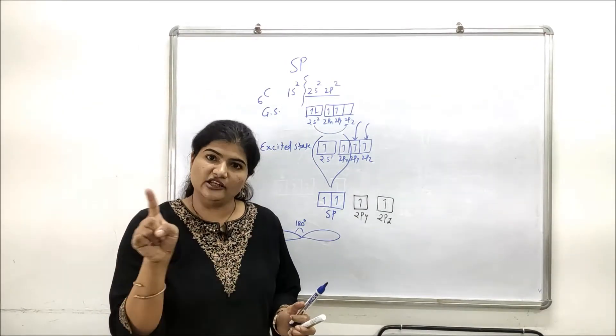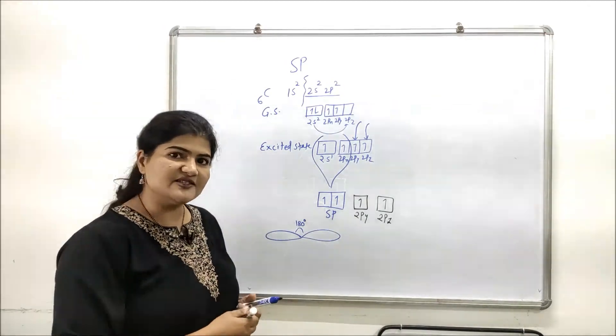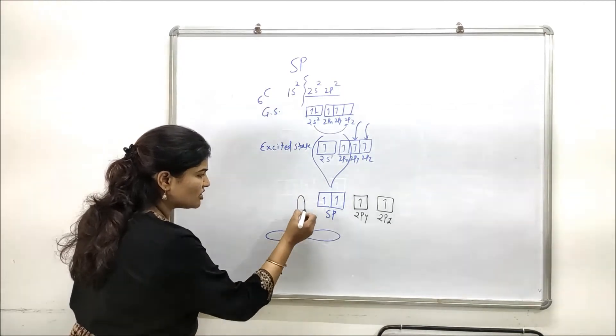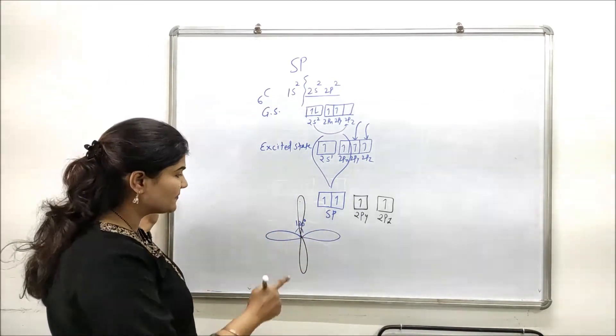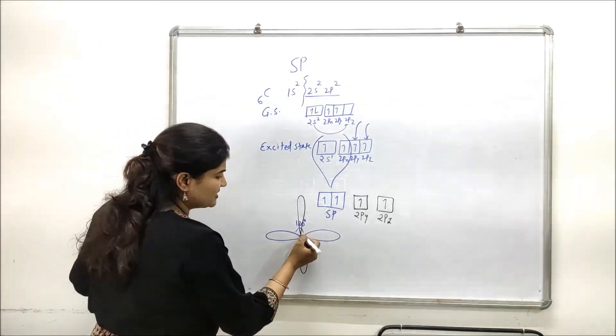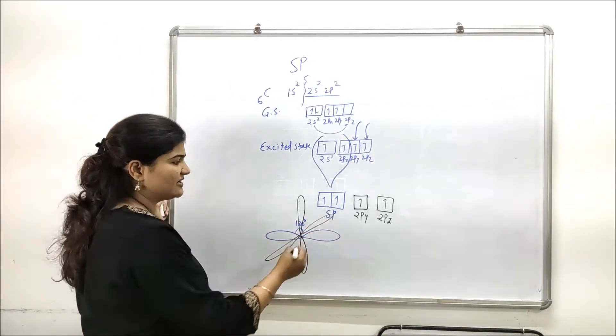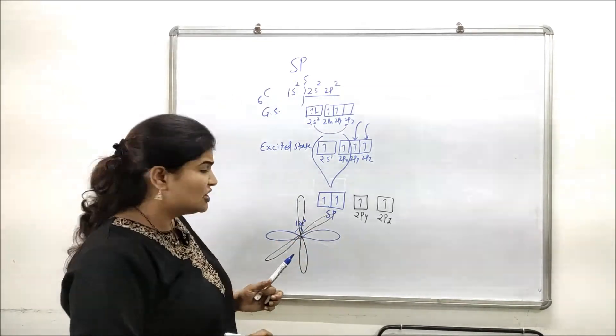We don't forget 2py and 2pz. They will be perpendicular to the plane of sp hybridized carbon. So 2py, if we draw like this, will be perpendicular to the sp plane. Then 2pz will be like this; it will also be perpendicular to the sp plane. This is how sp hybridized carbon looks.